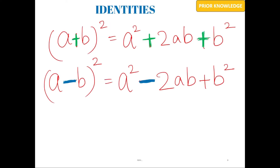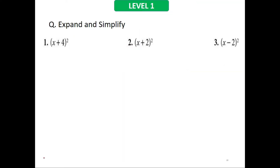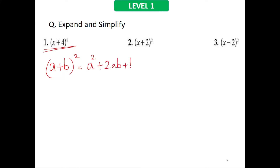Before I teach you how to complete a square, we should see how it is expanded, and then we'll work back to completing the square. To expand and simplify: the first question is x plus 4, the whole square. Since it is positive, I'll use the identity a plus b, the whole square, which equals a squared plus 2ab plus b squared.